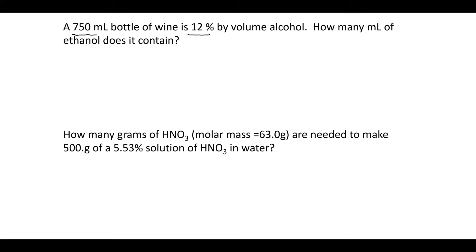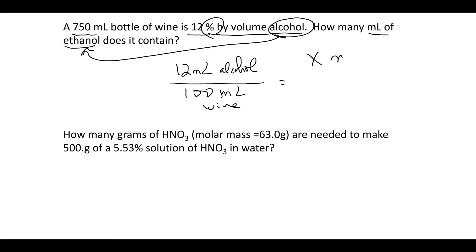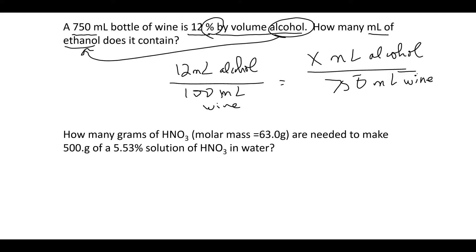If we have a 750 mL bottle of wine that is 12% by volume alcohol (ethanol), how many mL of alcohol does it contain? 12% means 12 mL of alcohol per 100 mL. Setting up the proportion: 12 mL alcohol / 100 mL wine = x mL alcohol / 750 mL wine. Cross-multiplying gives us 90 mL of alcohol.